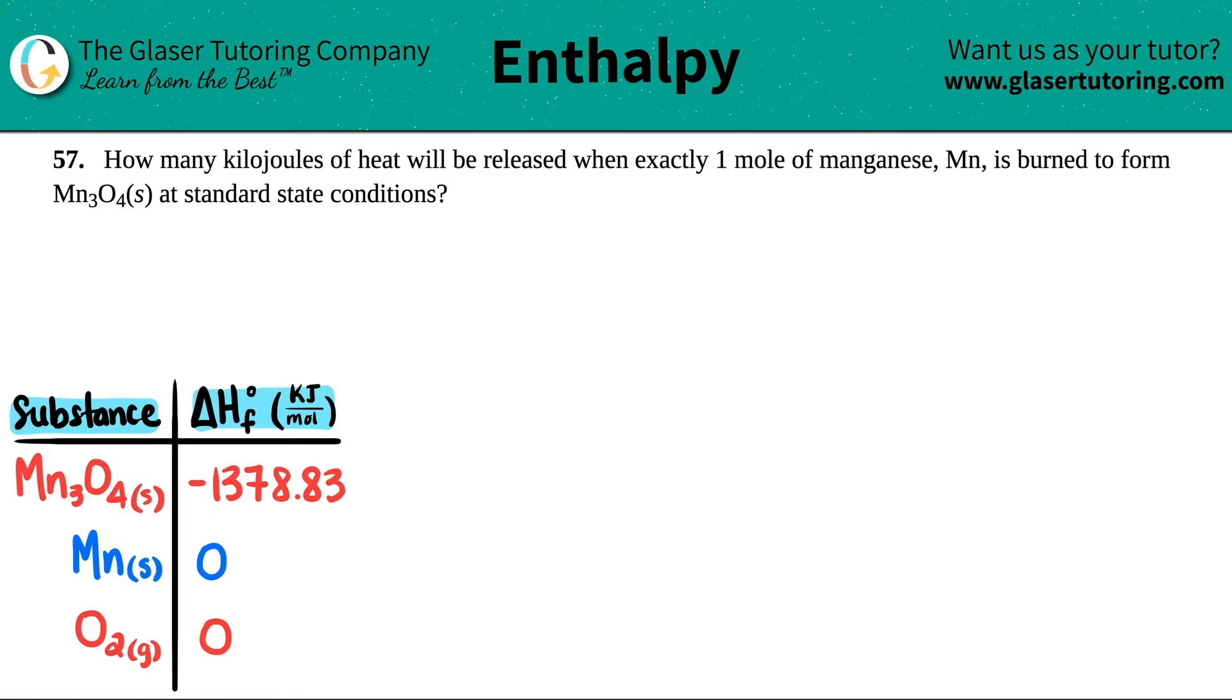Number 57: How many kilojoules of heat will be released when exactly one mole of manganese (Mn) is burned to form Mn₃O₄ solid at standard state conditions? Okay, so the first thing we have to do here is basically write a balanced equation.